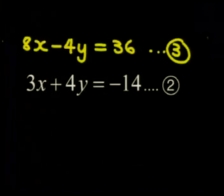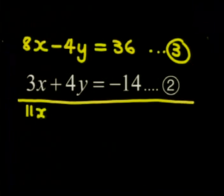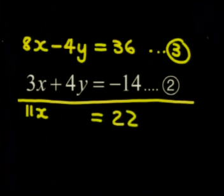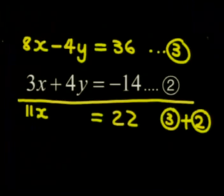To eliminate the y's, we add like terms in the two equations. We get x is equal to 2.